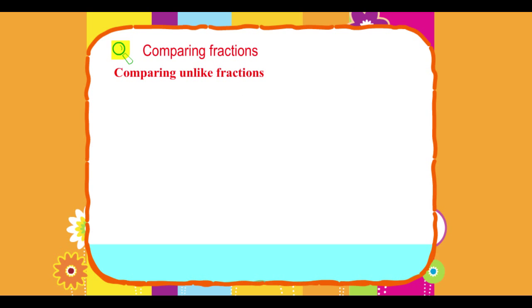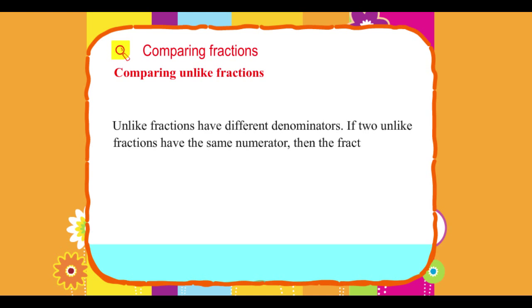Comparing unlike fractions. Unlike fractions have different denominators. If two unlike fractions have the same numerator, then the fraction with the smaller denominator is greater.